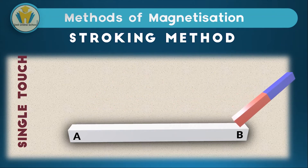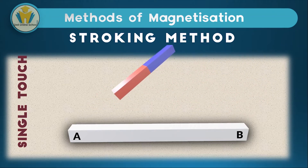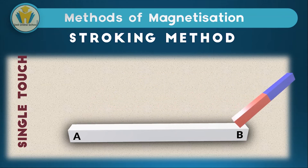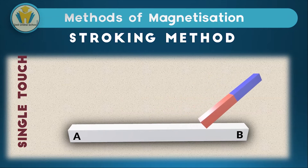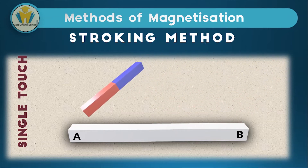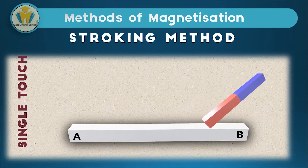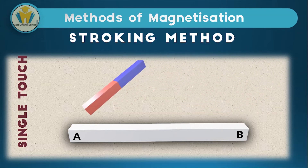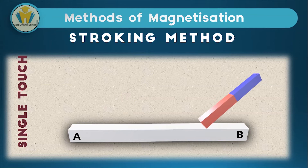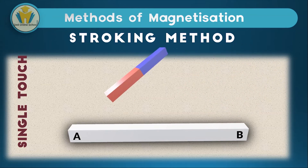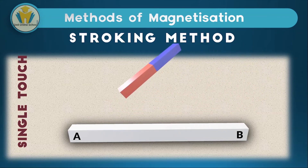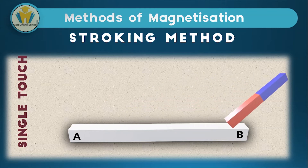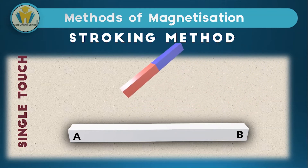You should note that the side where the permanent magnet leaves the magnetic material is where we're going to start labeling a pole. Hence, in this diagram, we're going to start from B. The pole produced on the side where the magnet is leaving is opposite to the pole being used. In this example, we're using the north pole to perform stroking, and therefore on side B, we're going to have a south pole.